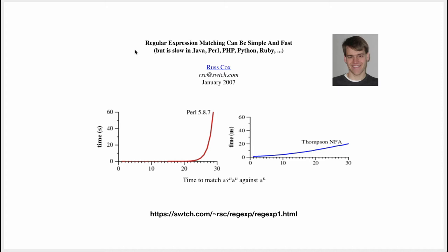It's an article that's called Regular Expression Matching Can Be Simple and Fast but Slow in Java, PHP, Perl, Python, Ruby. It's an article by Russ Cox and it's this guy and he's one of the co-creators of the Go language. We'll actually also talk in this video about the other co-creator of Go which is Ken Thompson.